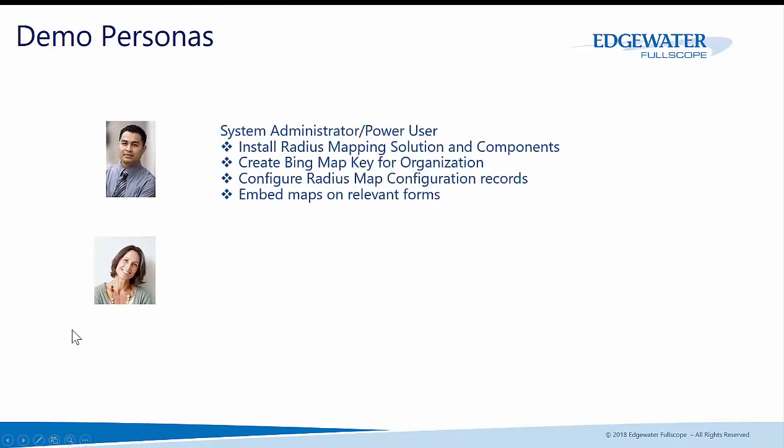The two demo personas are the system administrator and the power user. That person is responsible for things like installing the solution and other various components, creating and configuring the Bing map for the organization, and setting up radius mapping configuration records — for example, do you want accounts to cluster within 50 miles or 250 miles of each other? This is highly configurable.